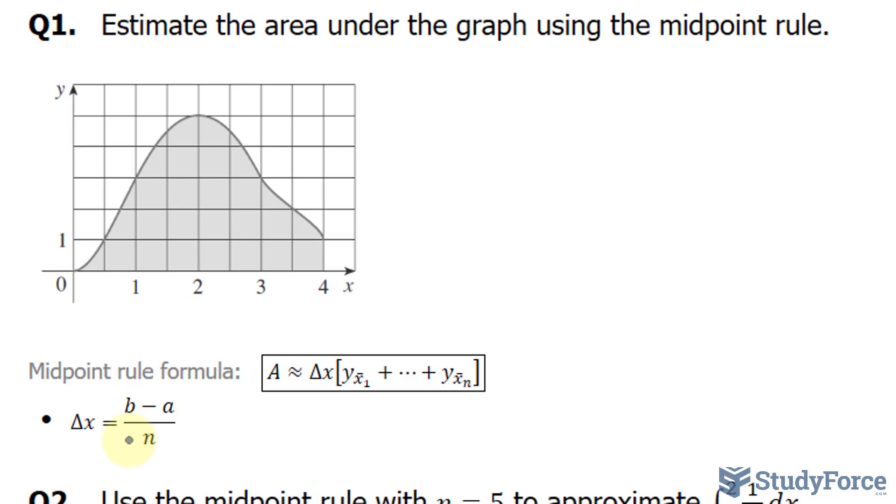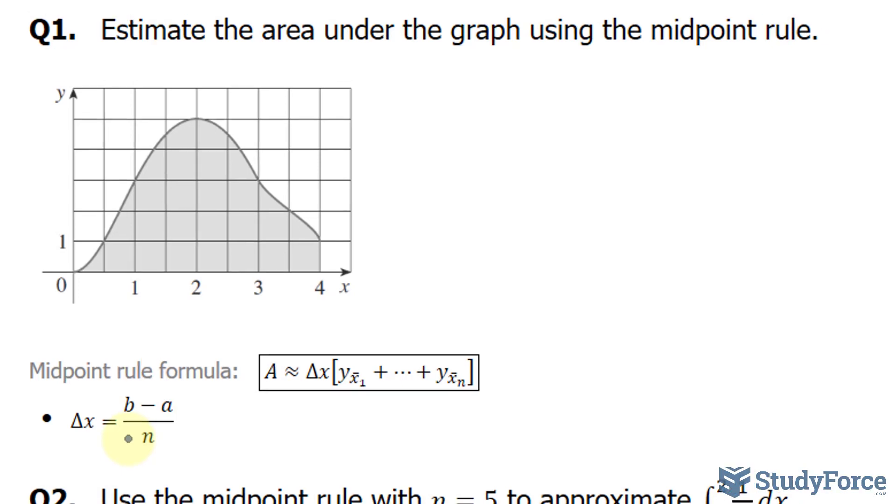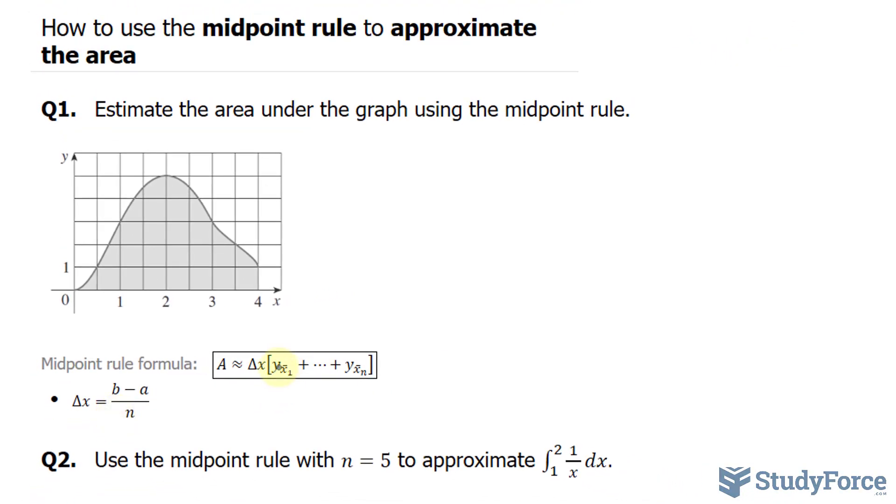Of course, you want to choose an n value that's reasonable, and in this particular case, we'll choose 4. Once you find delta x, you then multiply it to the sum of all the y-coordinates that are located at the midpoint of each of the rectangles you draw.